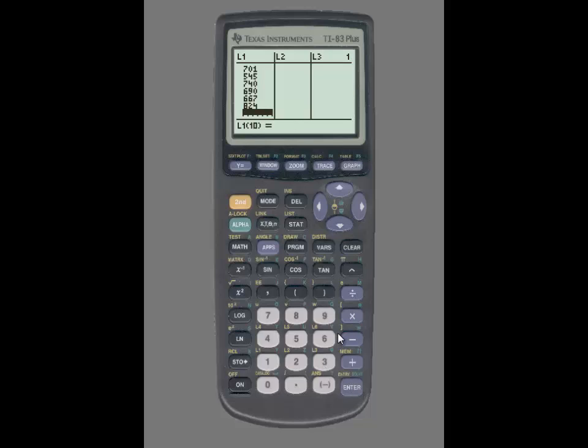If by chance you made a mistake, you can simply use the up or down arrow key and go to the specific observation. You can press Delete, or you can simply type over the observation. So you can press Delete and it'll completely delete the observation, or you can just type over it. Since I deleted it, let me put it back into the list, and again, I'm going to press Enter. Once all of the data is entered into the list...